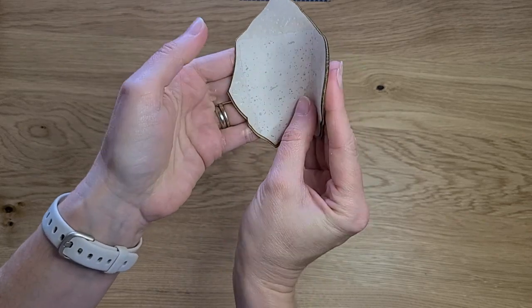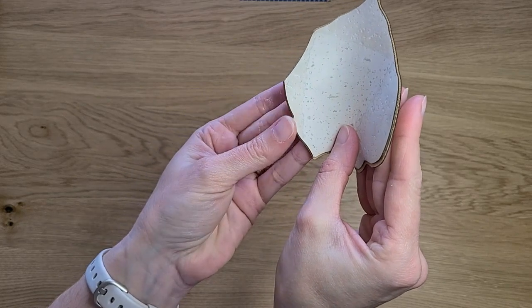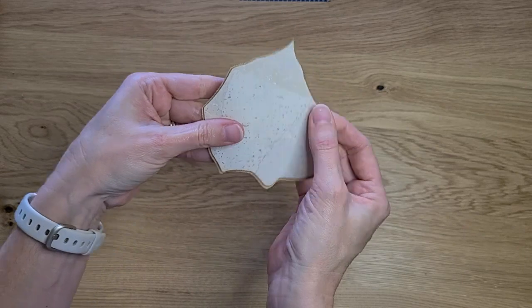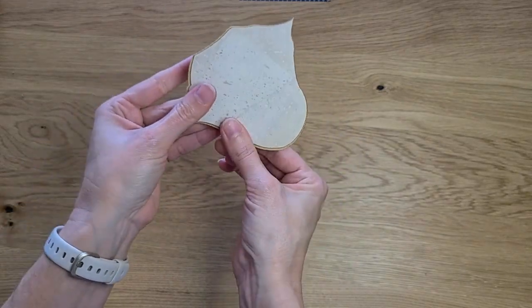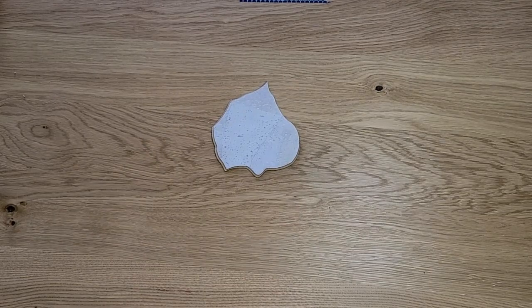Again, as we curve this around, you can see that piece slides so you're not going to be able to see it once you have your petal curved. But for now, let that lay flat. We're going to let that dry while we move on to our next step.